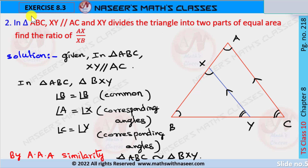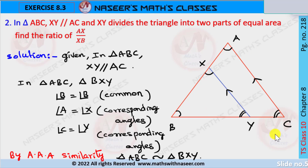After 8 similar triangles, exercise 8.3, second problem. In triangle ABC, XY is parallel to AC. XY divides triangle ABC into 2 equal parts of area. Find the ratio of AX and XB. According to the given problem, triangle ABC, XY is parallel to AC, and XY divides ABC into 2 equal parts of area.